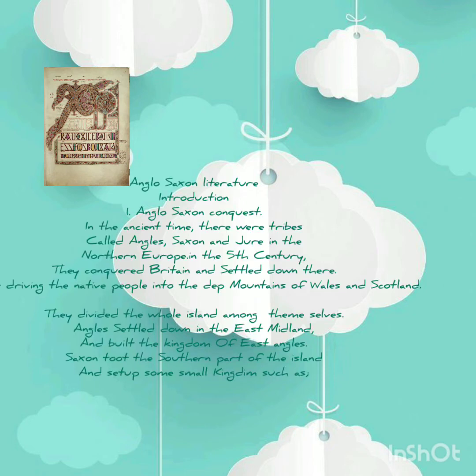Anglo-Saxon Literature Introduction: Anglo-Saxon conquest. In ancient times, there were tribes called Angles, Saxons, and Jutes in northern Europe. In the 5th century, they conquered the Britons and settled down there, after driving the native people into the deep mountains of Wales and Scotland.